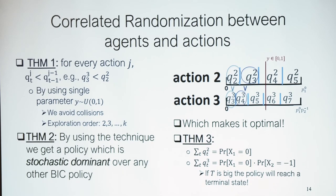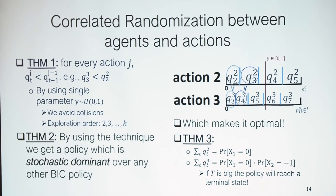There is one pair of agent and time t in which our policy is strictly higher. We can also show that by summing all the exploration rates of one action, we get the probability that the action before it did not receive the optimal reward. This allows us to show that if we have enough agents and action one is not optimal, we will eventually explore action two, and if action two also has reward minus one, we continue on for k actions.